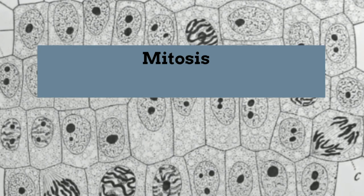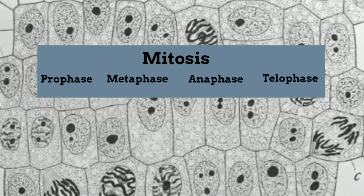Mitosis is the process by which a cell divides its nucleus into two. Mitosis involves four stages: prophase, metaphase, anaphase, and telophase. Let's take a look at each stage.